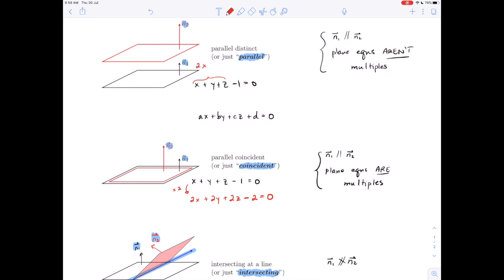So we'd still have something like 2X plus 2Y plus 2Z, but the entire equation could not be the same multiple. So I might have something like minus 3 equals 0. So the plane equations are not full multiples, but the normal vectors are.